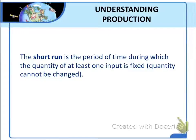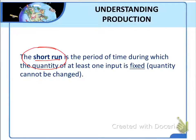The amounts of some types of inputs can't be adjusted quickly. It takes a long time to expand factories and assembly lines. Consider a construction company that wants to expand its business — it can take several months of planning and negotiation before the company can complete the purchase of heavy equipment like cranes and bulldozers. The same is true if a company wants to downsize. So over a time period lasting several months or more, the construction company is stuck with a fixed quantity of equipment. Economists define this as the short run — a period of time during which the quantity of at least one input is fixed.